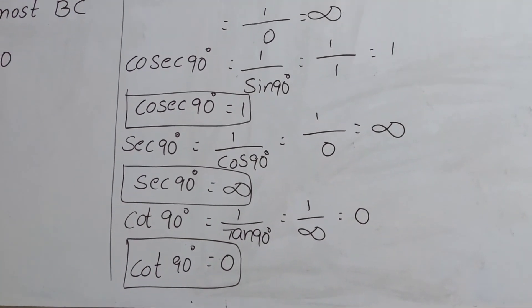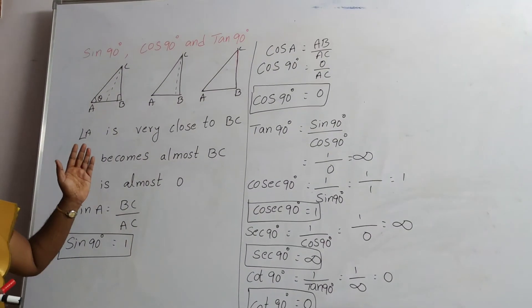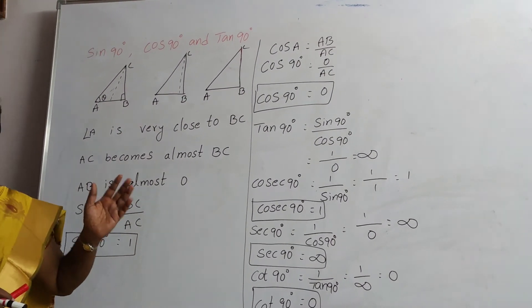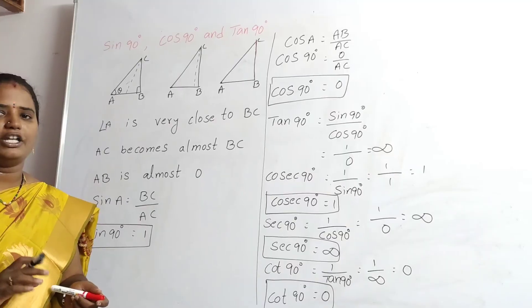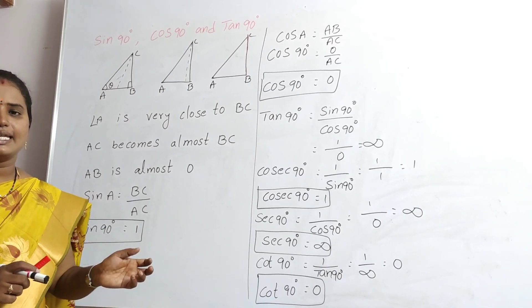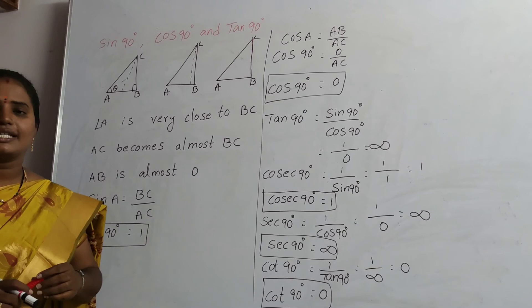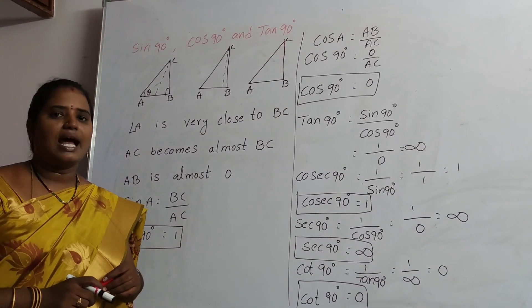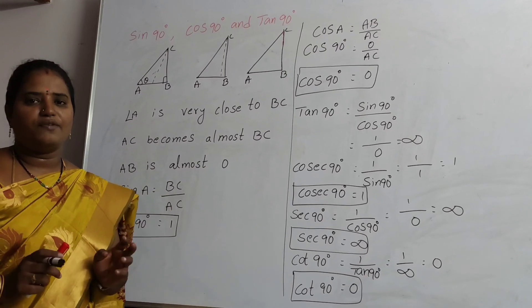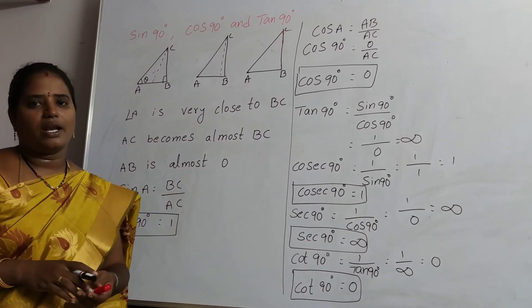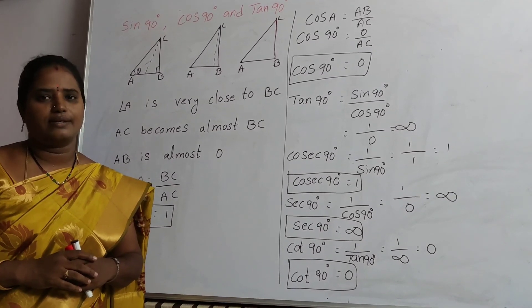We have already discussed the geometrical proofs of all trigonometric ratios — the values of sin 30, cos 30, tan 30; sin 45, cos 45, tan 45; sin 60, cos 60, tan 60; sin 90, cos 90, tan 90; and sin 0, cos 0, tan 0. I will now give you a brief table summarizing all trigonometric ratio values. Thank you.